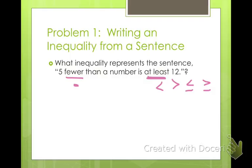So five fewer than a number, I have a number, I'm going to take five away from it, is at least twelve. That means it's going to have to be greater than twelve, but it could also be equal to. So my answer would be n minus five is greater than or equal to twelve.